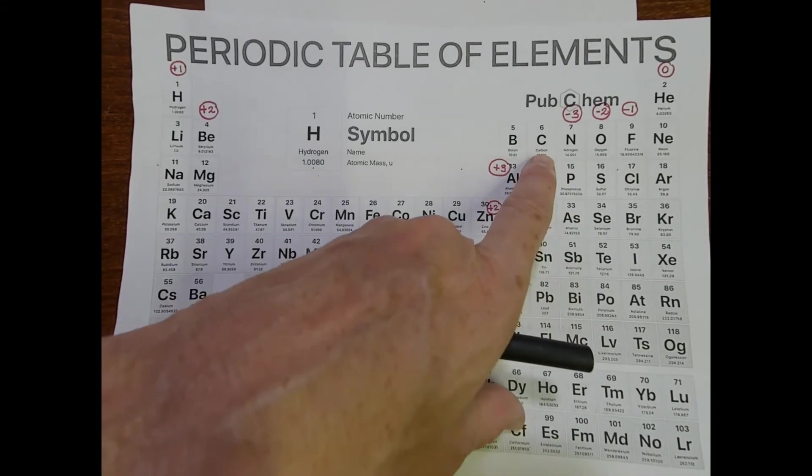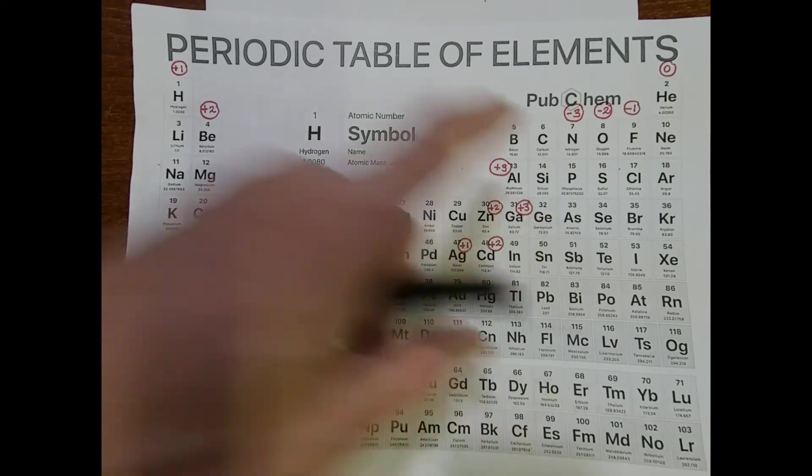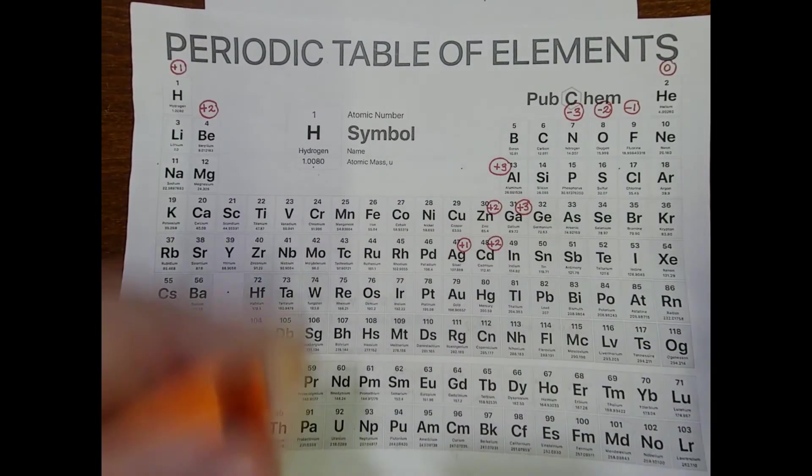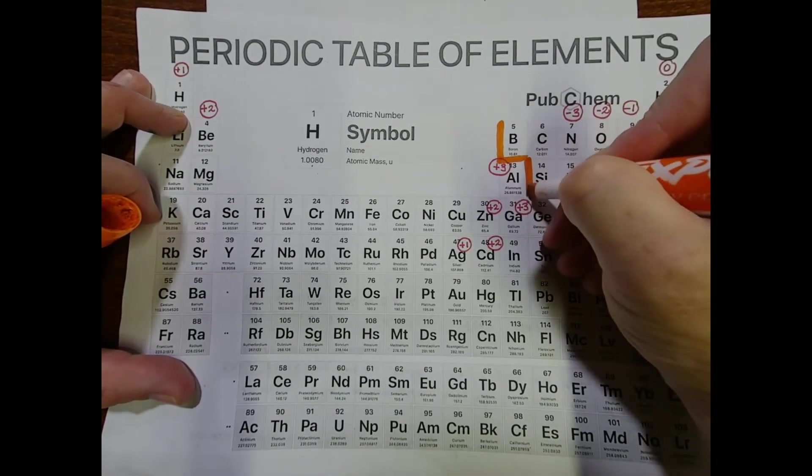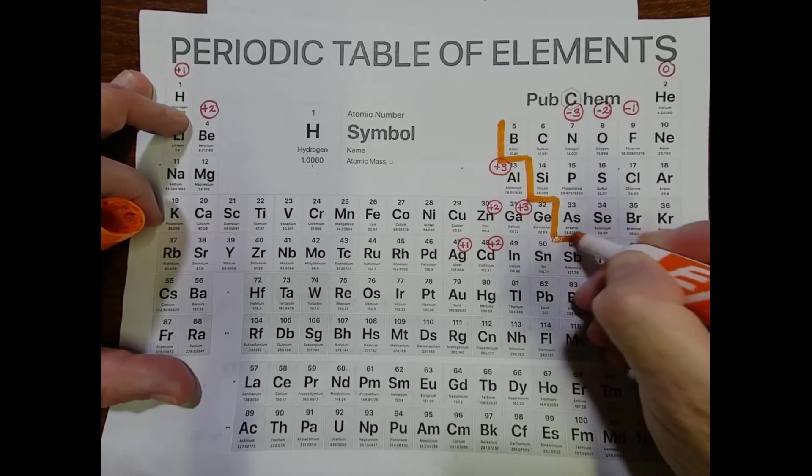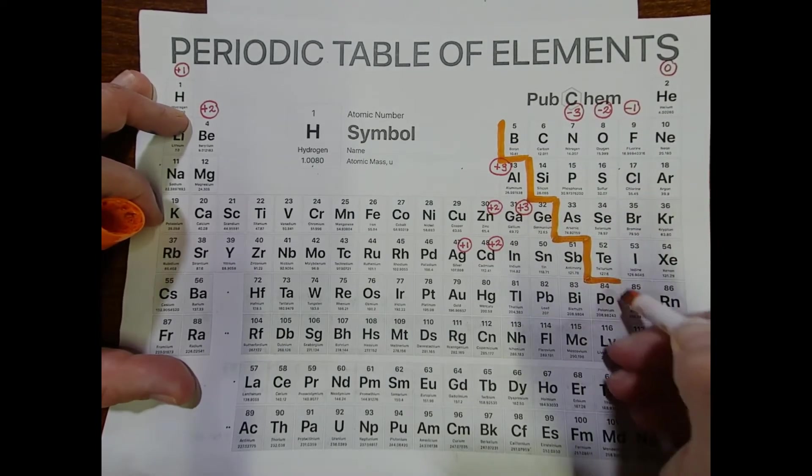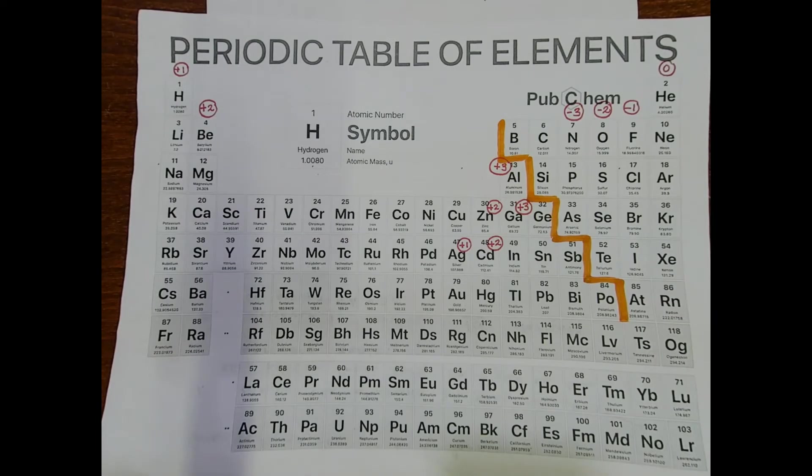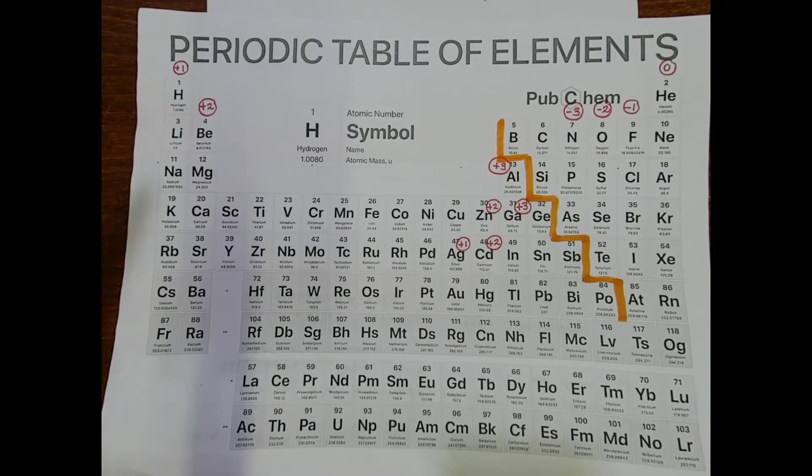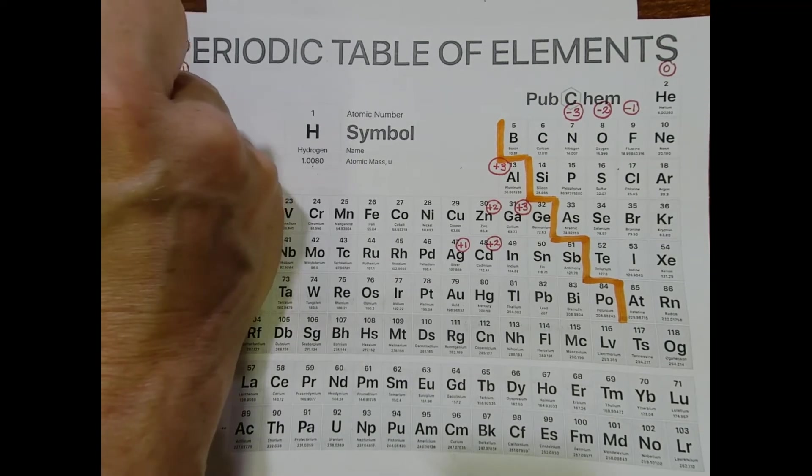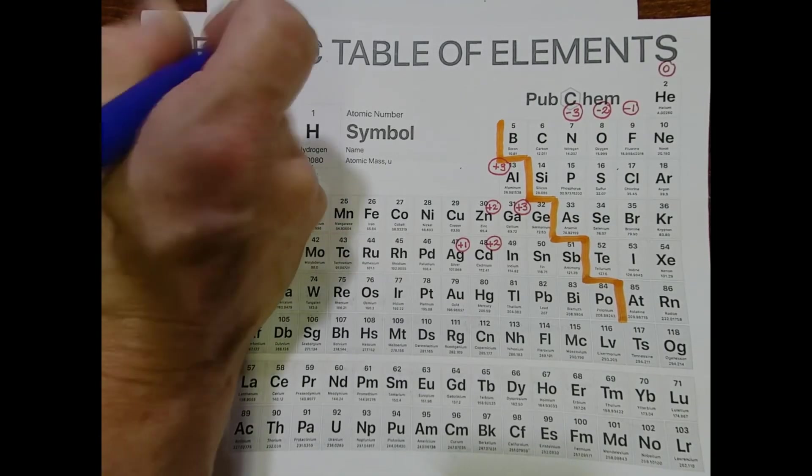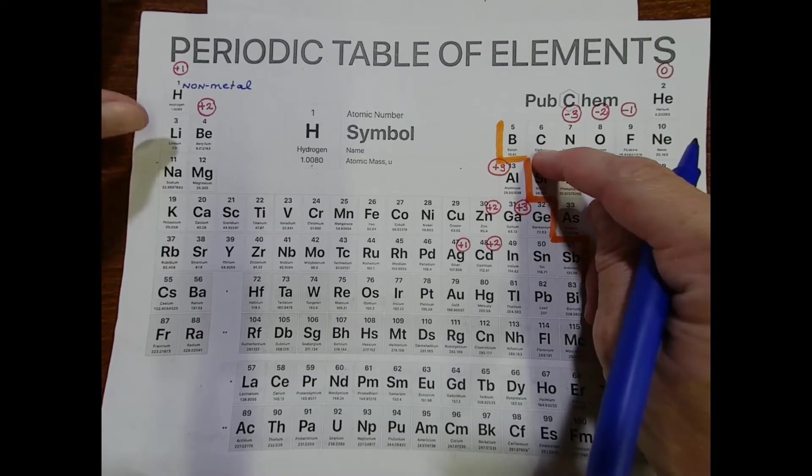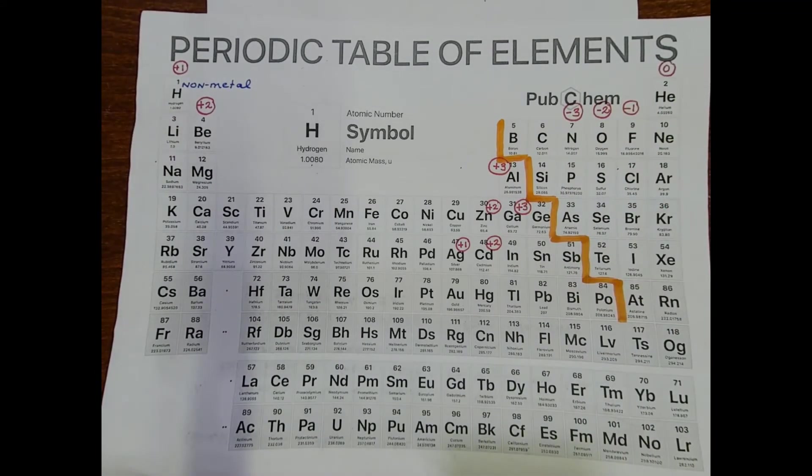Carbon is all the way over here, it's to the right of our staircase. I should draw that in on this periodic table. Remember if an element is to the right of the staircase it's going to be a nonmetal. Hydrogen is over here but remember hydrogen is kind of misplaced - hydrogen is a nonmetal as well. So we have a nonmetal with a nonmetal which means we have a covalent compound.